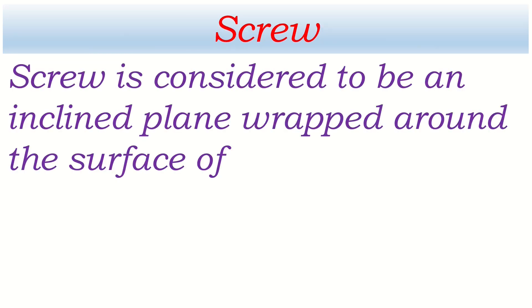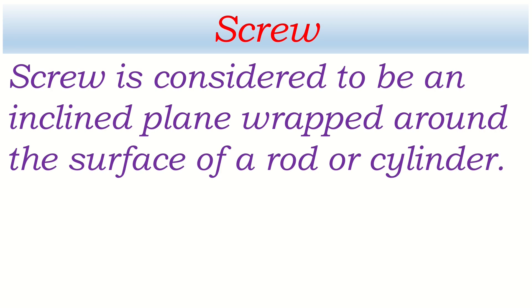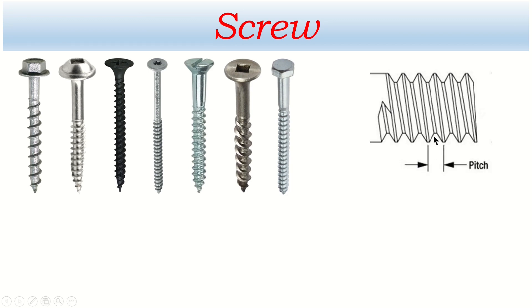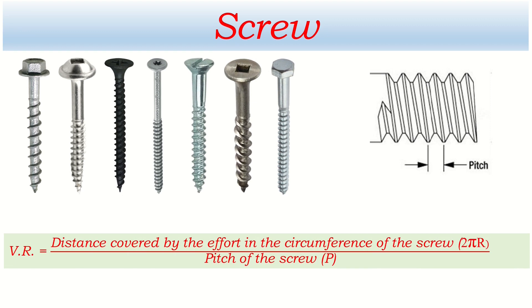A screw is considered to be an inclined plane wrapped around the surface of a rod or cylinder. An important concept here is pitch — the distance between two neighboring threads of the screw. The distance between neighboring threads varies on a screw. The pitch is the distance the load travels per turn. The velocity ratio of a screw is the ratio of the distance covered by the effort along the circumference, denoted by 2πr, to the pitch of the screw, denoted by p. This formula is used to find the velocity ratio of a screw.